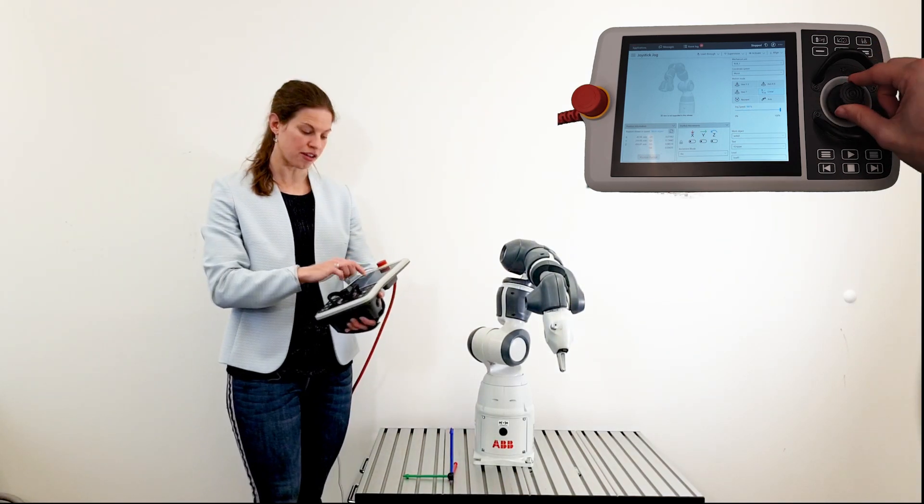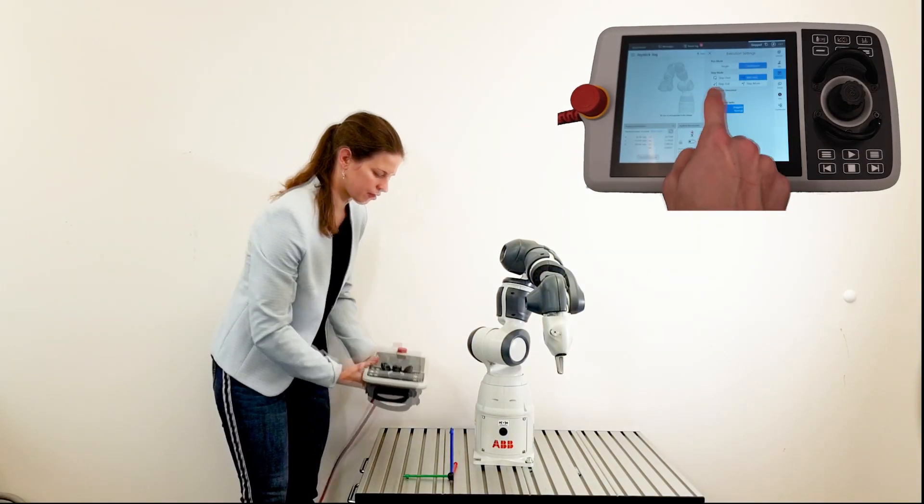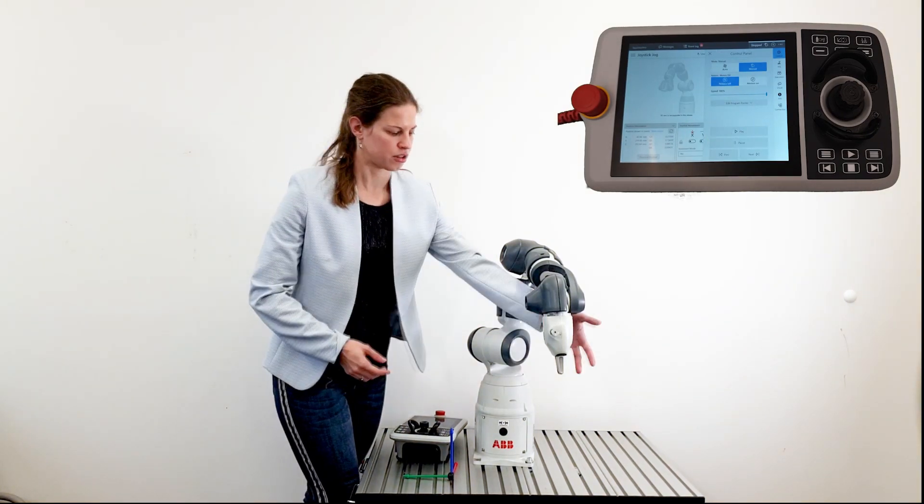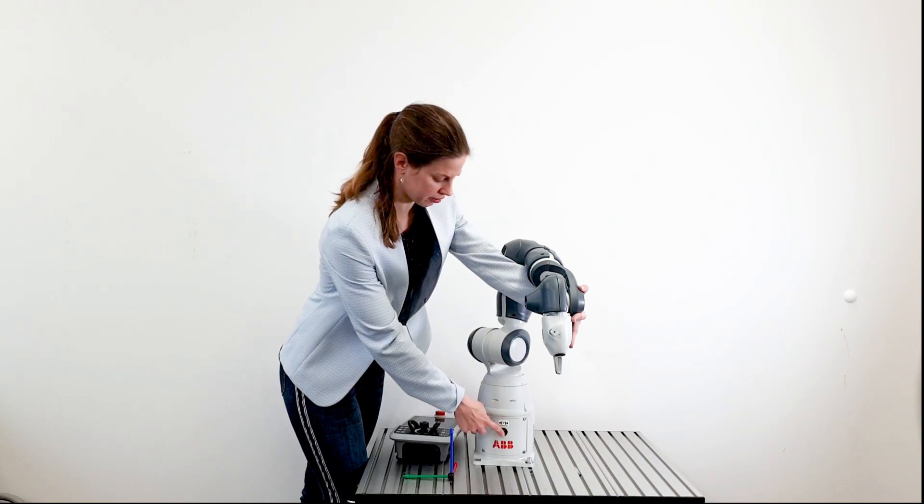If you switch motors off, you can move your robot here. So put your arm under the robot, press the brake release button.